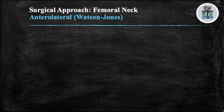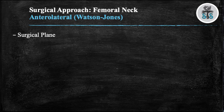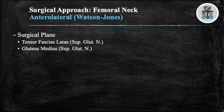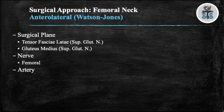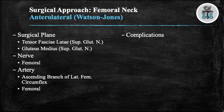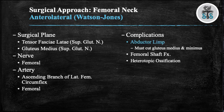The next surgical approach is the Watson-Jones, also known as the anterolateral approach. The surgical plane is between the tensor fasciae latae and the gluteus medius. The nerve at risk is the femoral nerve. The arteries at risk are the ascending branch of the lateral femoral circumflex and the femoral artery. Potential complications include abductor limp from cutting the gluteus medius and minimus, femoral shaft fracture most commonly during dislocation, and a higher rate of heterotopic ossification.